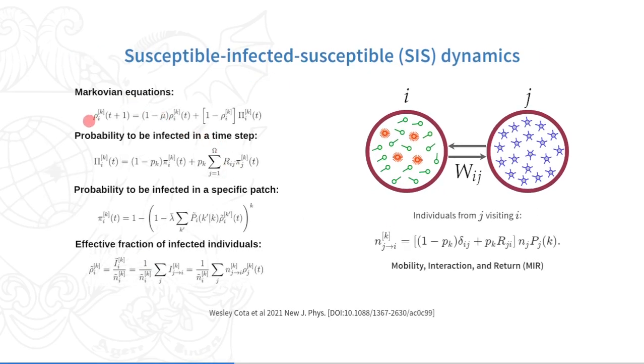Next, we will write Markovian equations for a susceptible-infected-susceptible dynamics. In all these equations, we use consecutive rounds of three stages: mobility, interaction, and return.